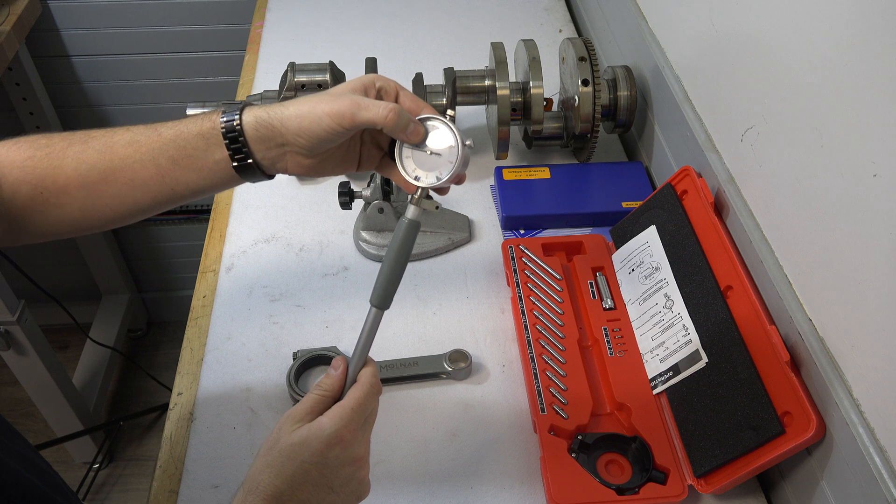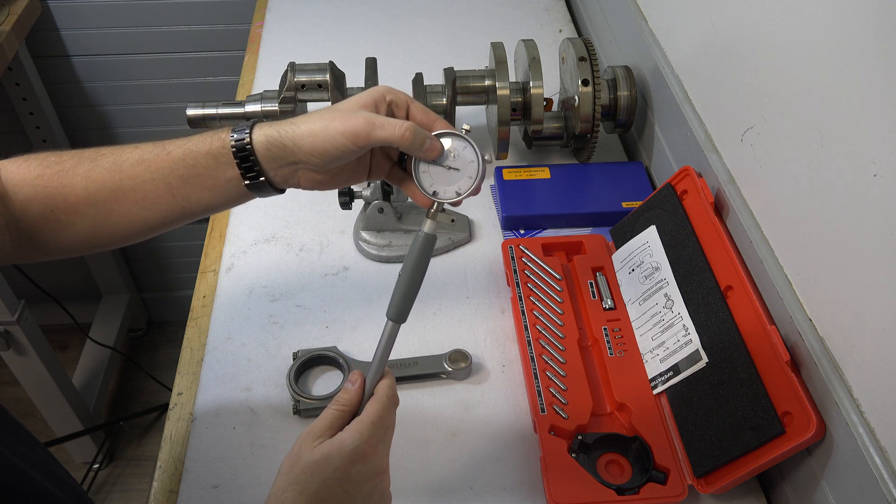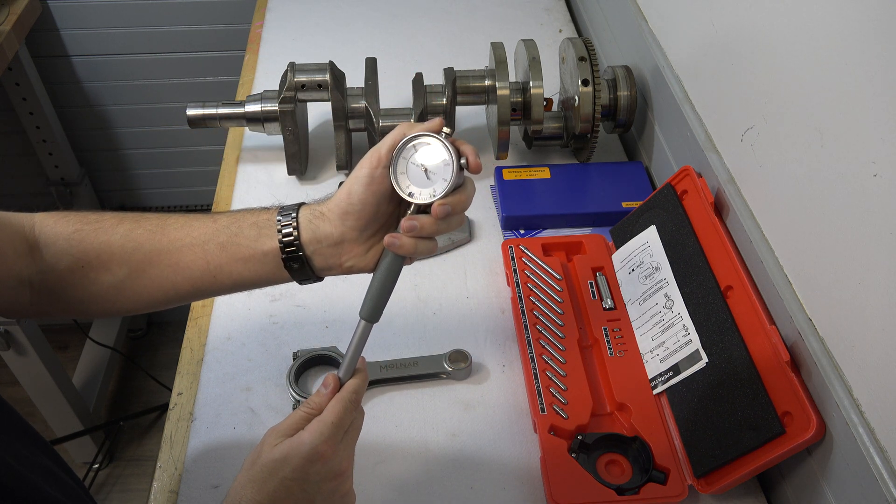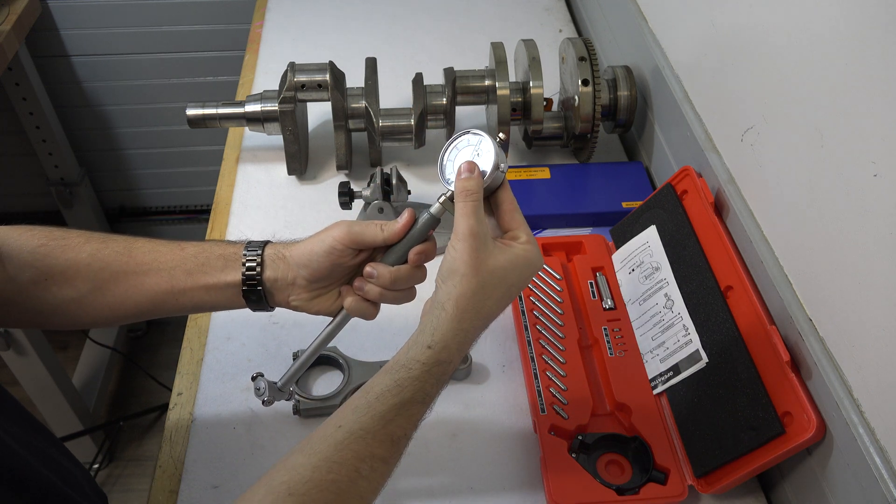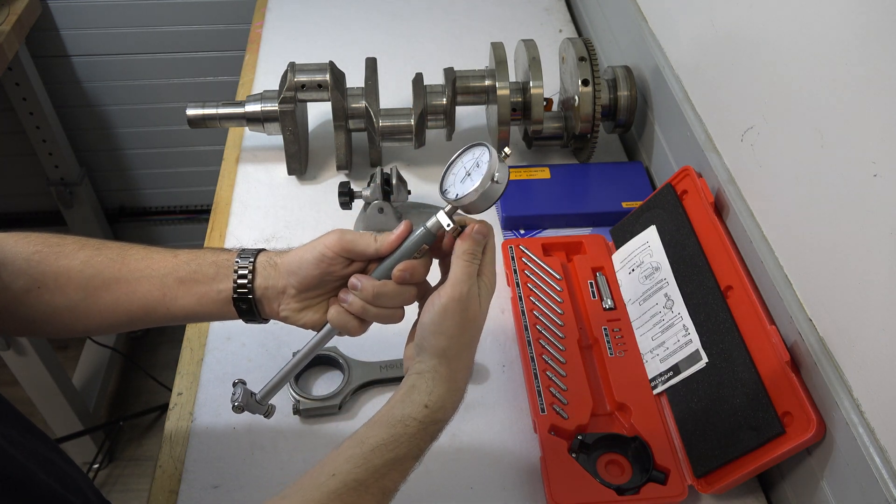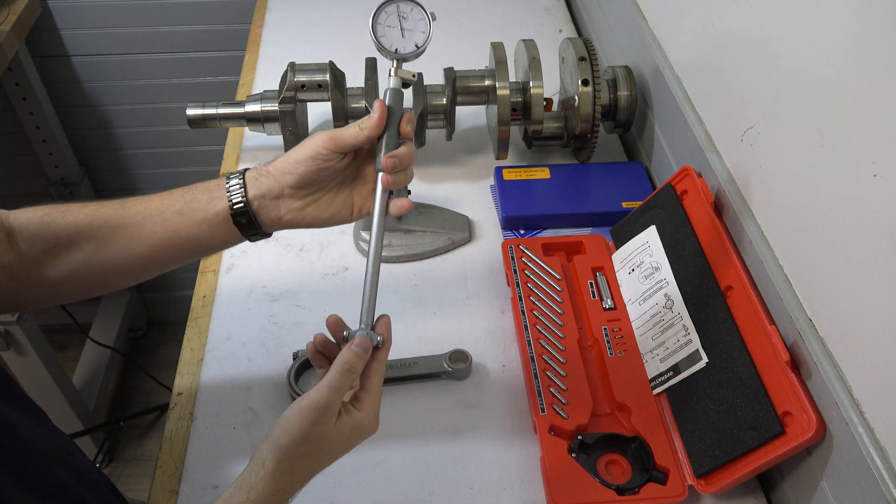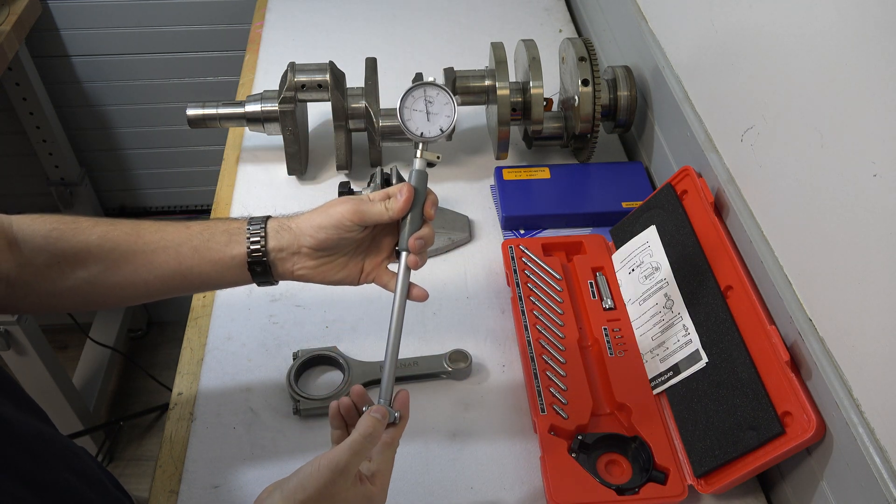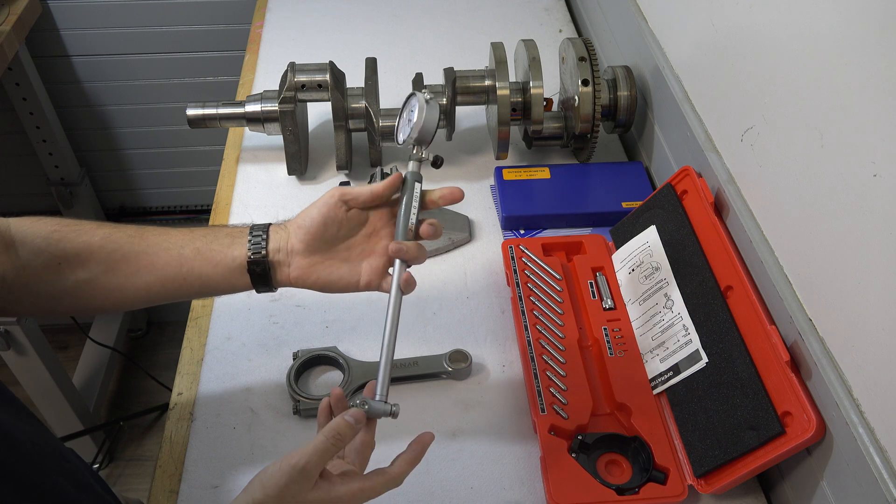This shows you how much preload we have on the indicator. We're looking for about a hundred thousandths there. Get it all squared up, tighten this down. Now you'll see when we push on our indicator here, it works.